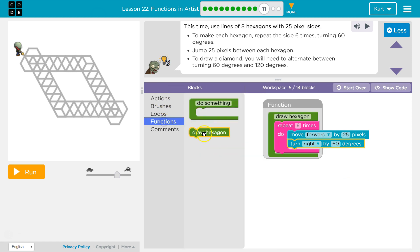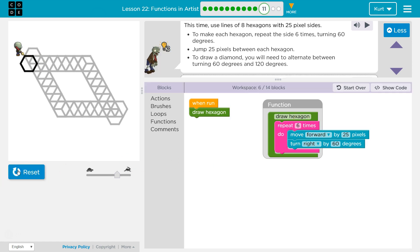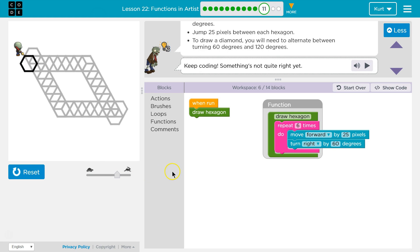So that should draw a hexagon. Let's go ahead and ask the computer run. Draw a hexagon. And it should run the code in this function, which six times move forward 25, turn right once, move forward, turn right, and we'll draw a hexagon. Hopefully.